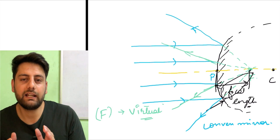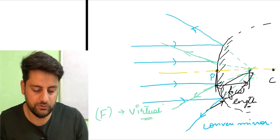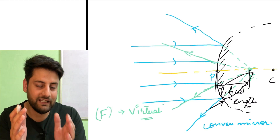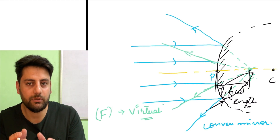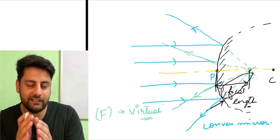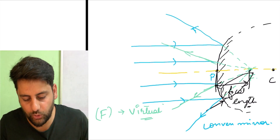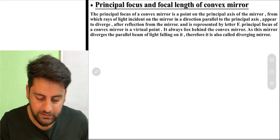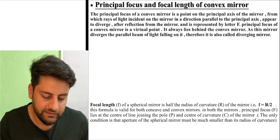So you understand that in a concave mirror, the principal focus lies in front of the mirror. And if we talk about a convex mirror, the principal focus, like the center of curvature, lies behind the mirror. Now let us talk about the ray diagrams.